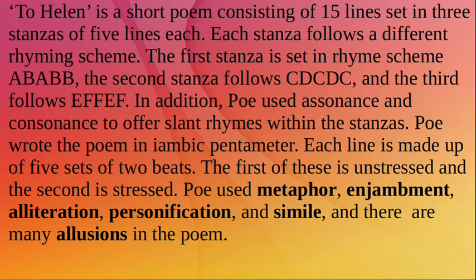Poe used assonance and consonance to offer slant rhymes within the stanzas. Poe wrote the poem in iambic pentameter — each line is made up of five sets of two beats, the first unstressed and the second stressed. Poe used metaphor, enjambment, alliteration, personification, and simile, and there are many allusions in the poem.